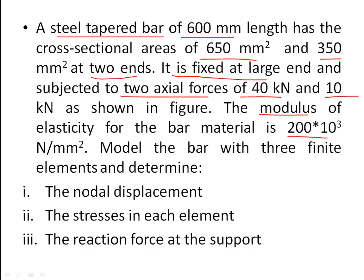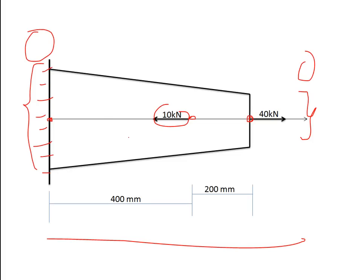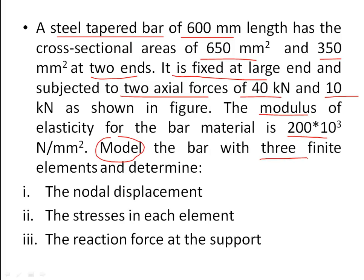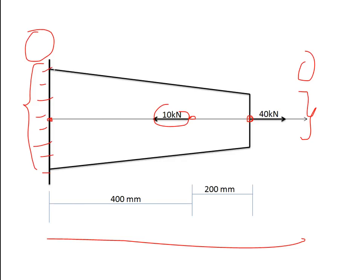We need to: first, model the bar with three finite elements; second, find nodal displacements; third, find stresses in each element; and fourth, find the reaction force at the support. Some reaction will be generated at the fixed end because of the two point loads.